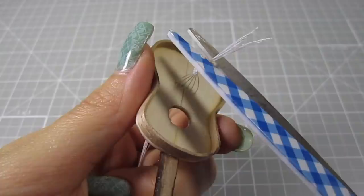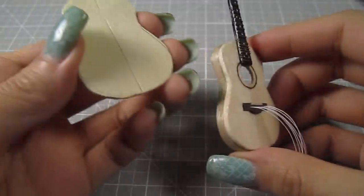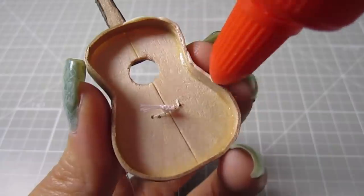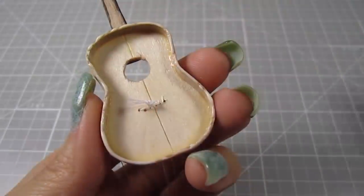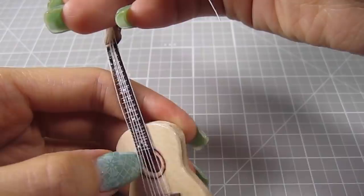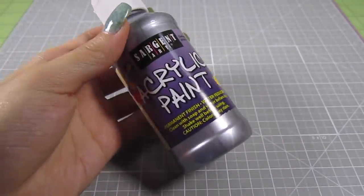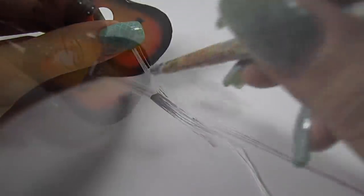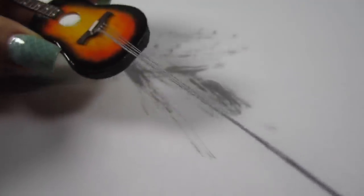You see? Tugging on them won't pull them out. Now you can glue the back piece of the body on. I like how the white thread really stands out against the dark neck but you can also paint the thread metallic silver for a more realistic look. Here's how the silver strings will look.